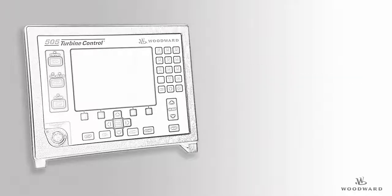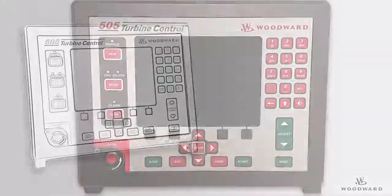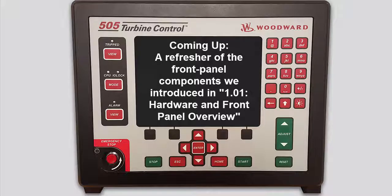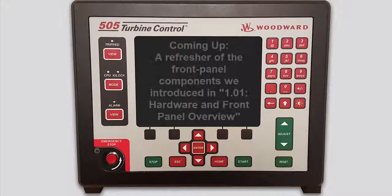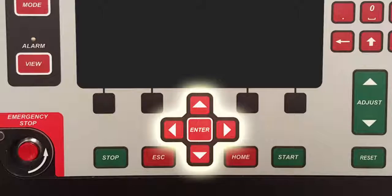You will be working with the functions and features of the controller often, so it is important to get a clear understanding of how to access the information you need. The first video in the 505 series, Hardware and Front Panel Overview, introduced you to the design and function of the components and keys located on the front panel of the 505. As you might recall, the navigation cross keys are the primary keys for navigating from screen to screen or for navigating to different objects on the screen.